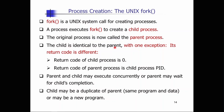The child is identical to the parent with one exception: only the return code is going to be different. Their process IDs are going to be different, which means the return value for the child process is going to be different from the return value of the parent process. The return code of the child process is going to be zero, and the return code of the parent process is going to be the process ID of the child it just created.